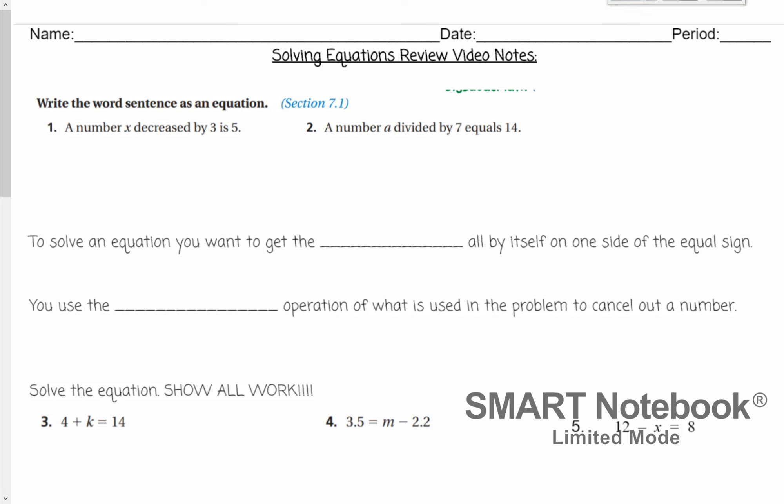Write the word sentence as an equation. We have a number x decreased by 3 is 5. Those are all the important things that we're told, and we're just going to write it left to right. So x is being decreased. Decrease tells us that's going to be subtraction because when a number is decreased by 5, we would subtract 5. So x decreased by 3 is x minus 3, is means equals 5. And that's our equation.